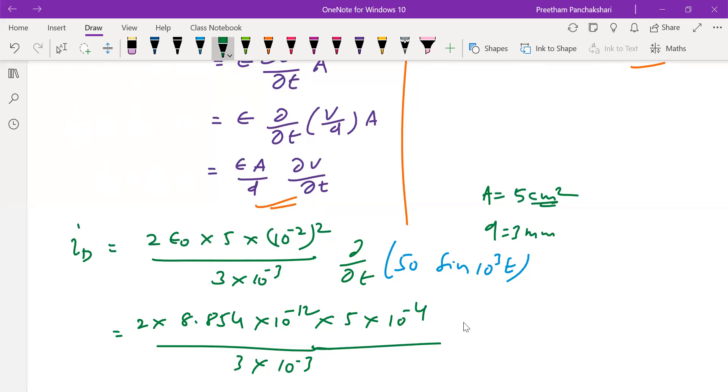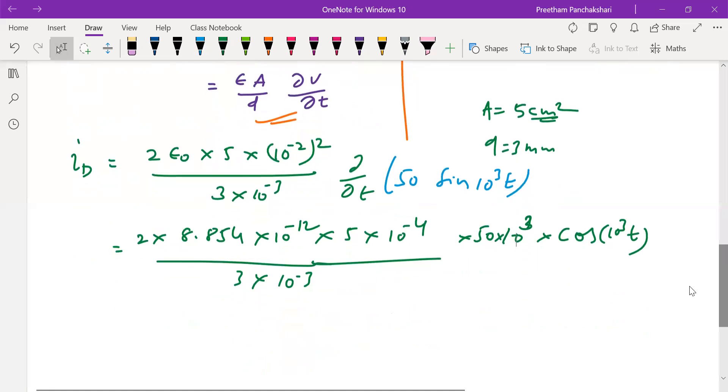And we have to differentiate this equation. 50 remains constant. Differentiation of sin is cos of 10 cubed t into 10 cubed. So we can multiply the terms in the amplitude of the cos all together.